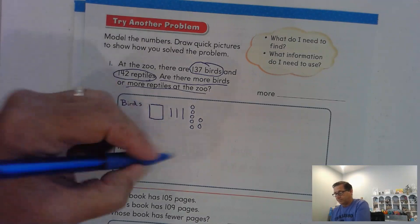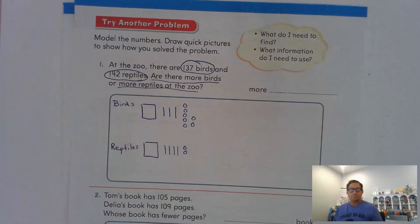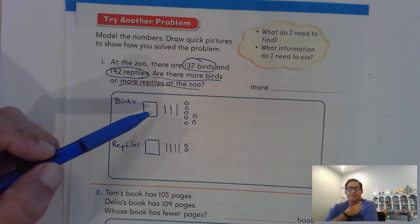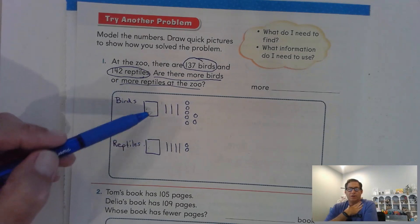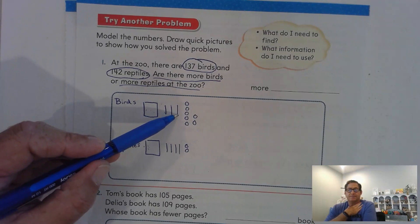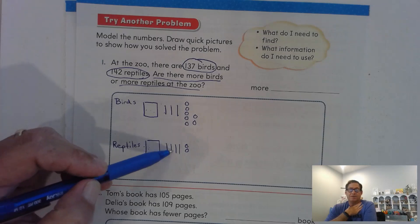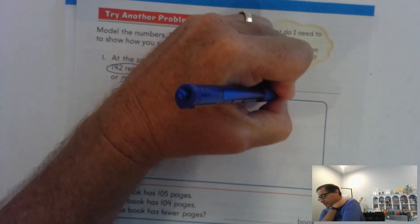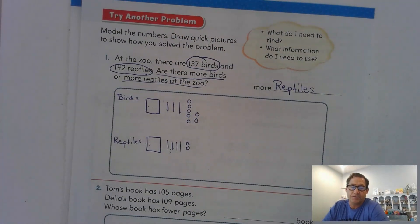Now the reptiles, 142. And again, the greatest value in 137 is 100. In 142, the greatest value is 100. But you notice that they're both 100. So we have to go to the next largest value. So we have 30 or three tens in the birds. And we have four tens in the reptiles. So there's more tens in the reptiles. So 142 is larger than 137.